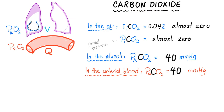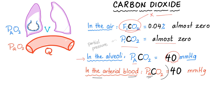We've talked about oxygen. Let's talk about carbon dioxide. CO2 is 0.04% of the atmospheric air — that's called FiCO2, and it's almost zero. PiCO2 is also going to be almost zero, because PiCO2 is derived by multiplying FiCO2 by a factor, and if FiCO2 is zero, PiCO2 is zero. In other words, CO2 in the atmosphere is almost non-existent, relatively speaking. In the alveoli, it's called PACO2 and it's around 40 mmHg. In the arterial blood, it's called PaCO2 and it's also around 40 mmHg. There is essentially no CO2 gradient — clinically, we only care about the A-a gradient for oxygen.